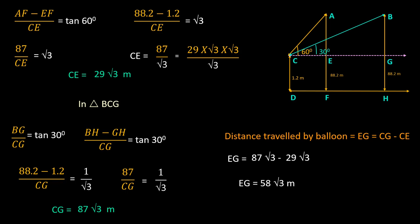The balloon travels a distance of 58 root 3 meter from A to B. This is how we apply the concept of trigonometry in our day to day life. Thank you.